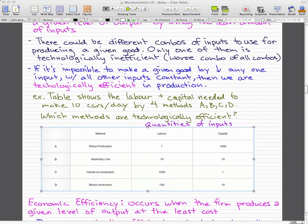So here's an example of a table that shows the labor and capital needed to make 10 cars a day using four methods A, B, C, and D. So method A is robot production, method B is assembly line, method C is making a car by hand, and D is bench production. So these are four different methods of which we can make a car.